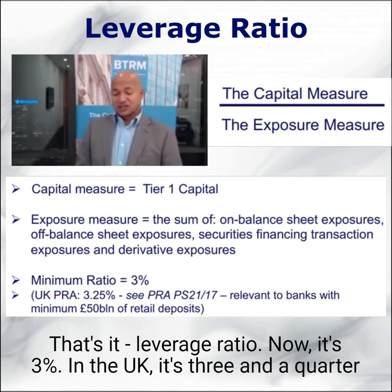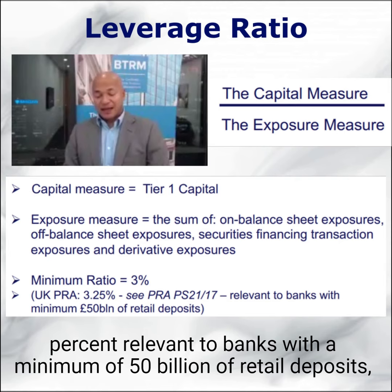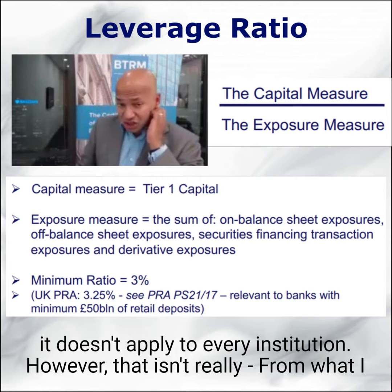The leverage ratio minimum is 3%. In the UK, it's 3.25%, relevant to banks with a minimum of £50 billion of retail deposits. So it doesn't apply to every institution.